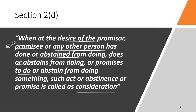Section 2, subsection D defines consideration as: at the desire of the promisor, the promisee or any other person has done, or abstained from doing, or does, or abstains from doing, or promises to do or abstain from doing something. This covers past, present, and future acts. Such act, abstinence, or promise is called consideration.